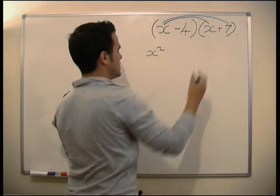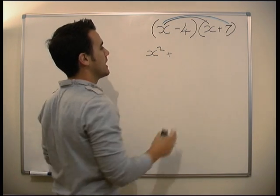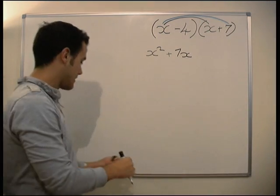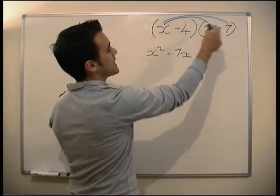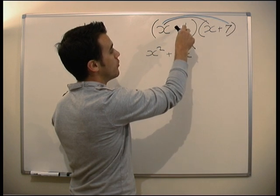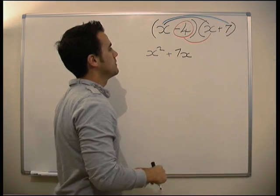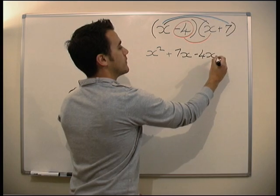x times 7 gives us plus 7x. Now we times the minus 4 by everything. Remember, it's minus 4. So we times that by the x, and we get minus 4x.